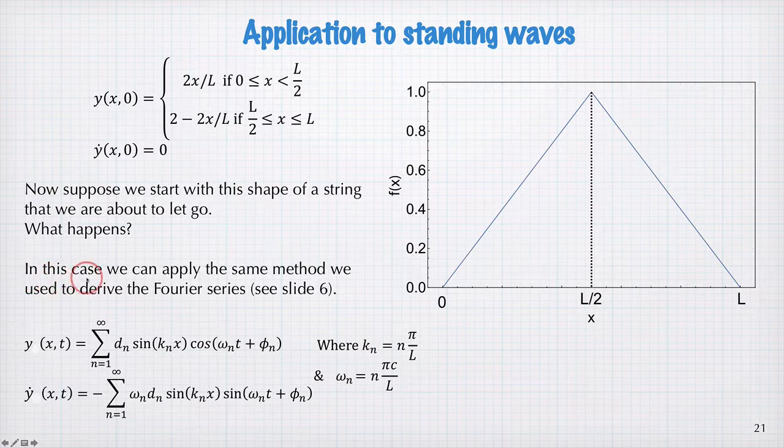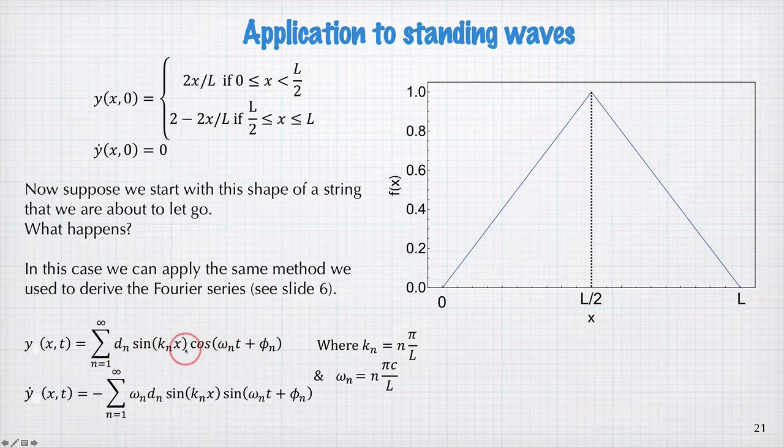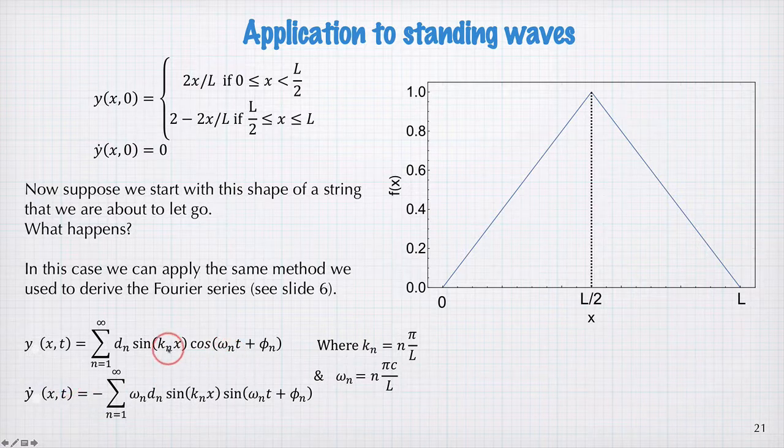Well, to find out, we can apply the same method we used to derive the Fourier series, back on slide 6, but this time, we're going to use just the allowed modes as the basis. So, these are these functions here, the sin(k_n x), with the time dependence cos(ω_n t + φ_n). And we need both the position and the velocity to fit the d_n and the φ_n.